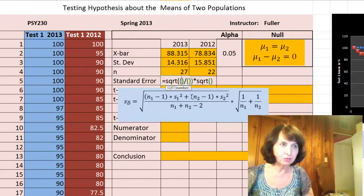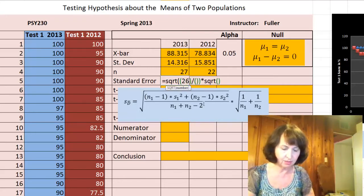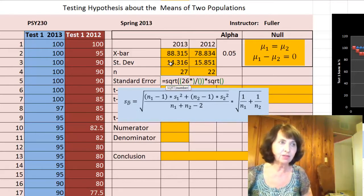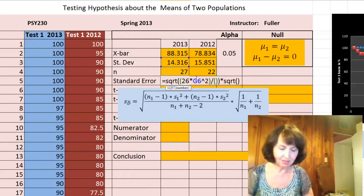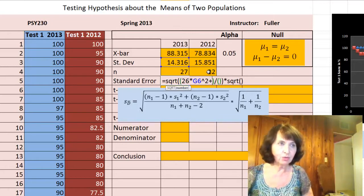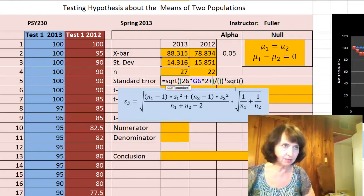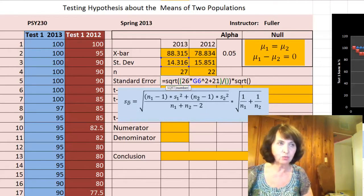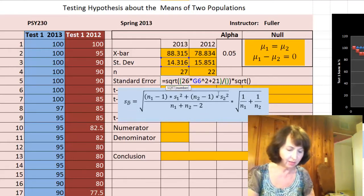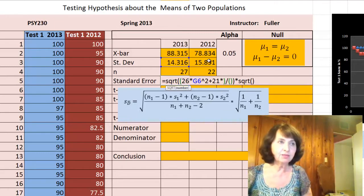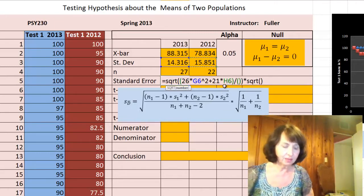Let's start with the numerator of the first square root. The numerator starts with n1 minus 1, which is 26. 27 minus 1 is 26 times the standard deviation of the first sample squared. The second sample is 21 times the standard deviation of the second sample squared.